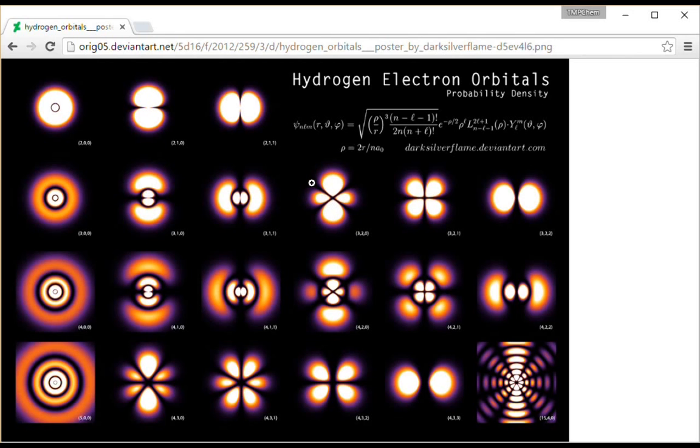The 3D orbitals, 3DZ squared, have two angular nodes. 3D ZX and ZY have two angular nodes. And then there's another one in plane here for DX squared minus Y squared and DXY, but we can't see it because we need to look at a different viewing angle.